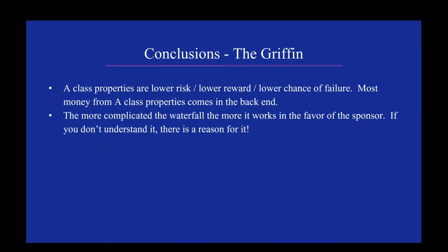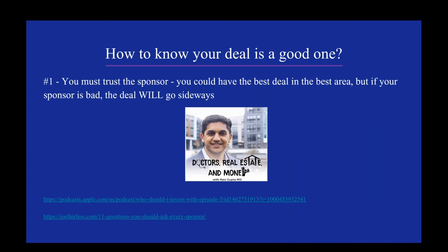Conclusions on the Class A Griffin deal: a Class A property is lower risk, lower reward, but also a lower chance of failure — this is where you maintain your principal. Most money from Class A properties comes at the backend, with little cashflow upfront. Reiterated: the more complicated the waterfall, the more it works in favor of the sponsor. If you see a very complicated waterfall, be wary — it's likely being structured so the sponsor gets more money.